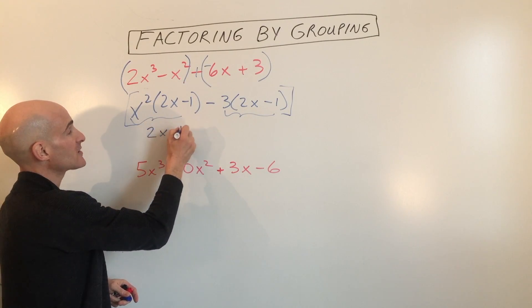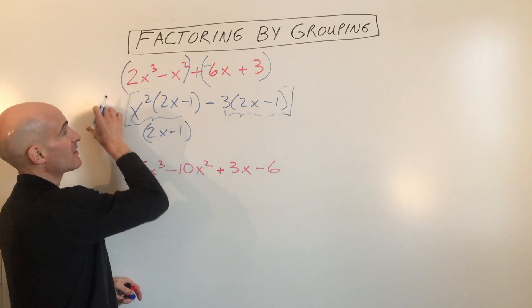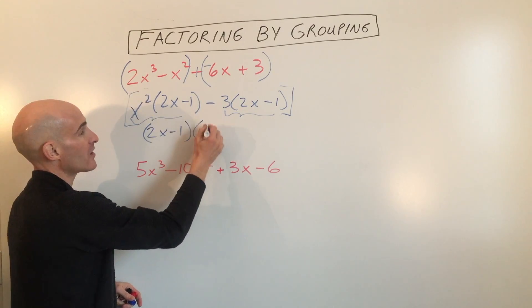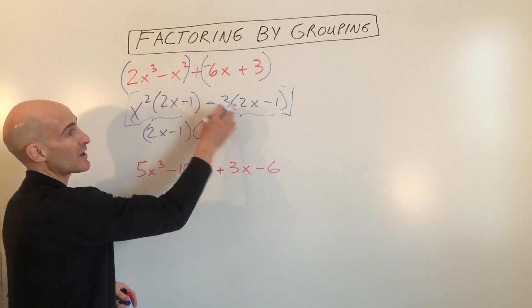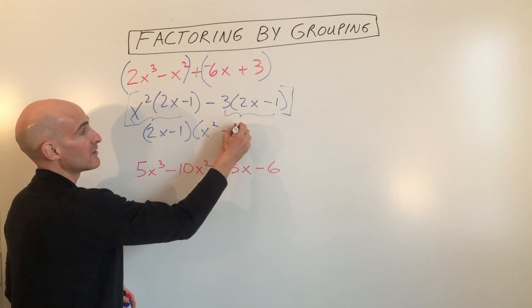So you have 2x minus 1 that we factored out of this group, so that leaves us with x squared. And we factor 2x minus 1 out of this group, we're left with 3.